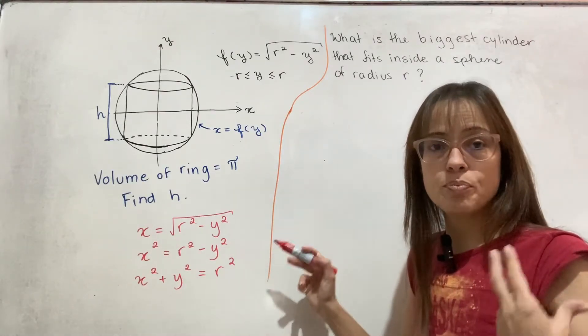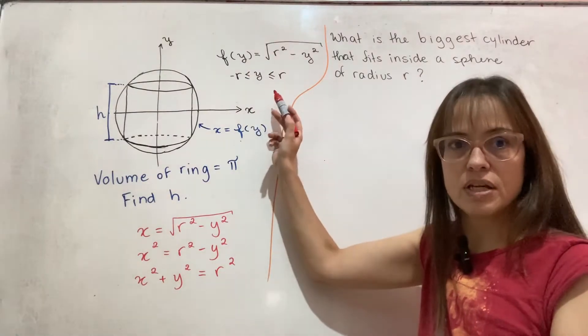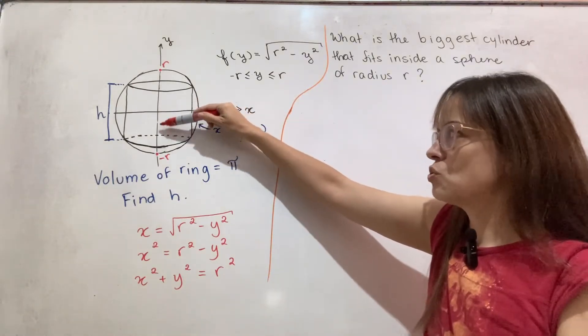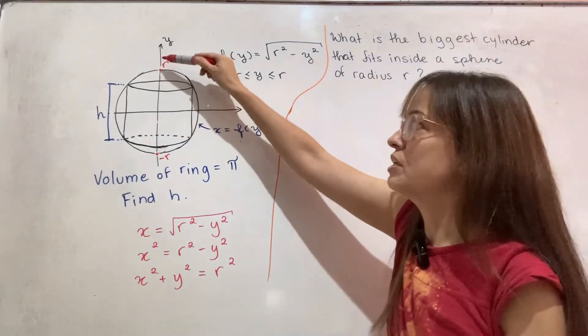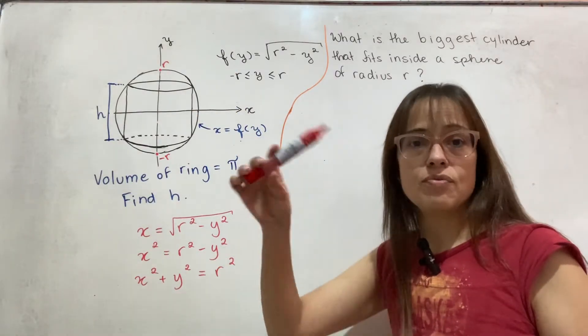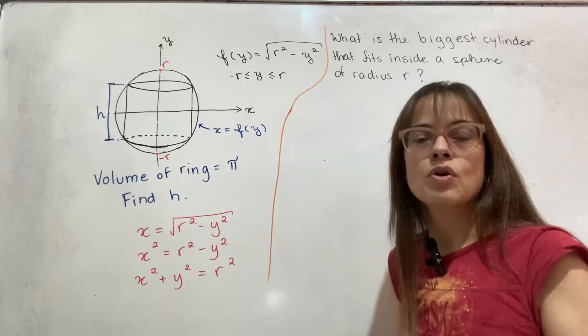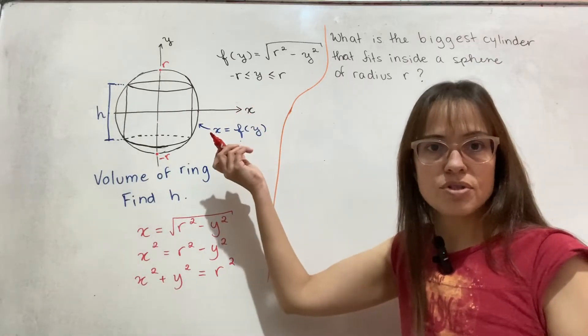Of course, that is just the equation of a circle. Since you're going to have x equals that, then you square both sides of the equation and add y squared to both sides. This is the equation of a circle. The radius of the circle is r.